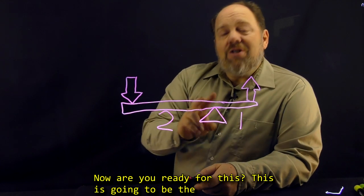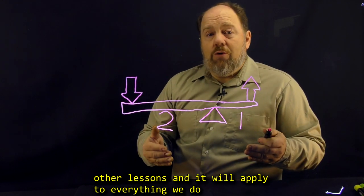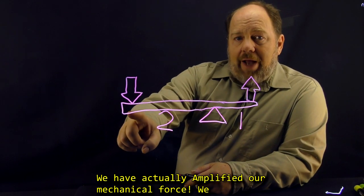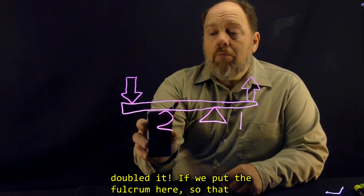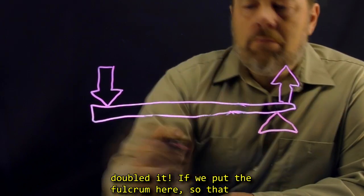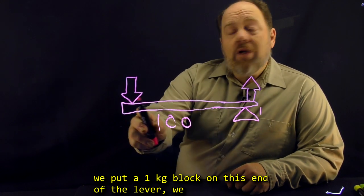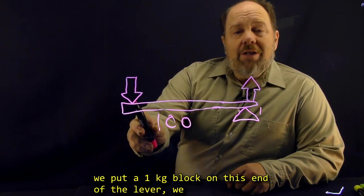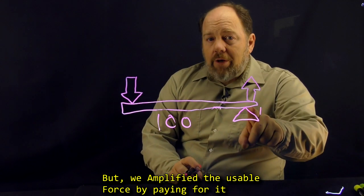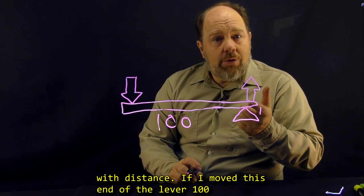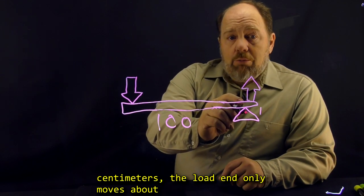Now, are you ready for this? This is going to be the number one lesson you take away from this lesson and all other lessons and it will apply to everything we do from here on out. We have actually amplified our mechanical force, we doubled it. So if we put the fulcrum here so that this distance is 100 times longer than this one, and we put a 1 kg block on this end of the lever, we can lift a whopping 100 kg on the other end. But we amplified the usable force by paying for it with distance. If I move this end of the lever 100 cm, the load end only moves about 1 cm.